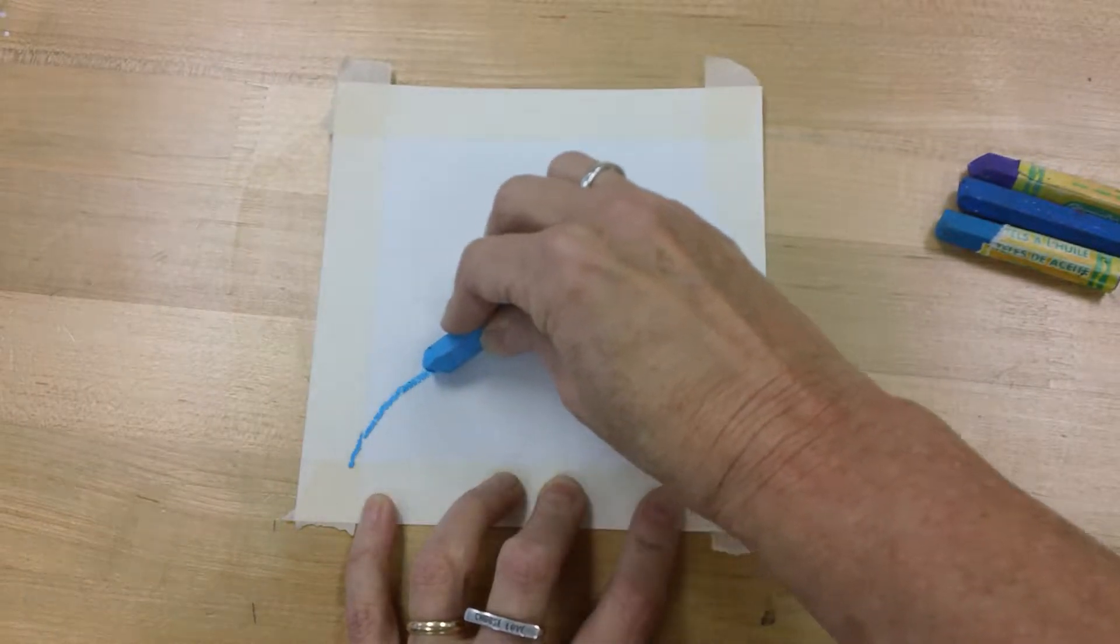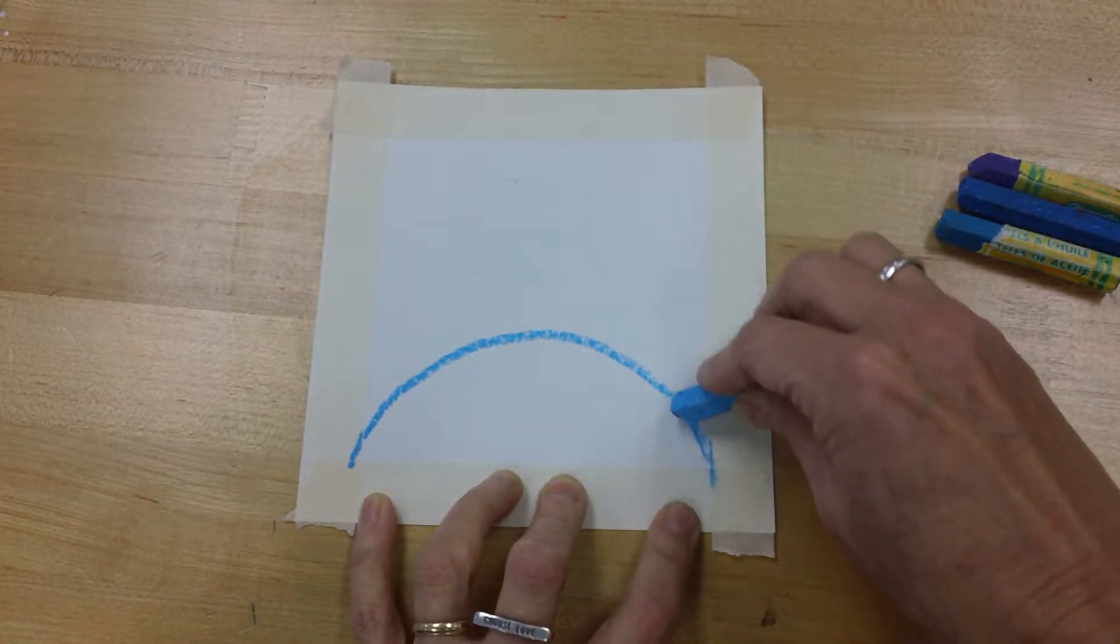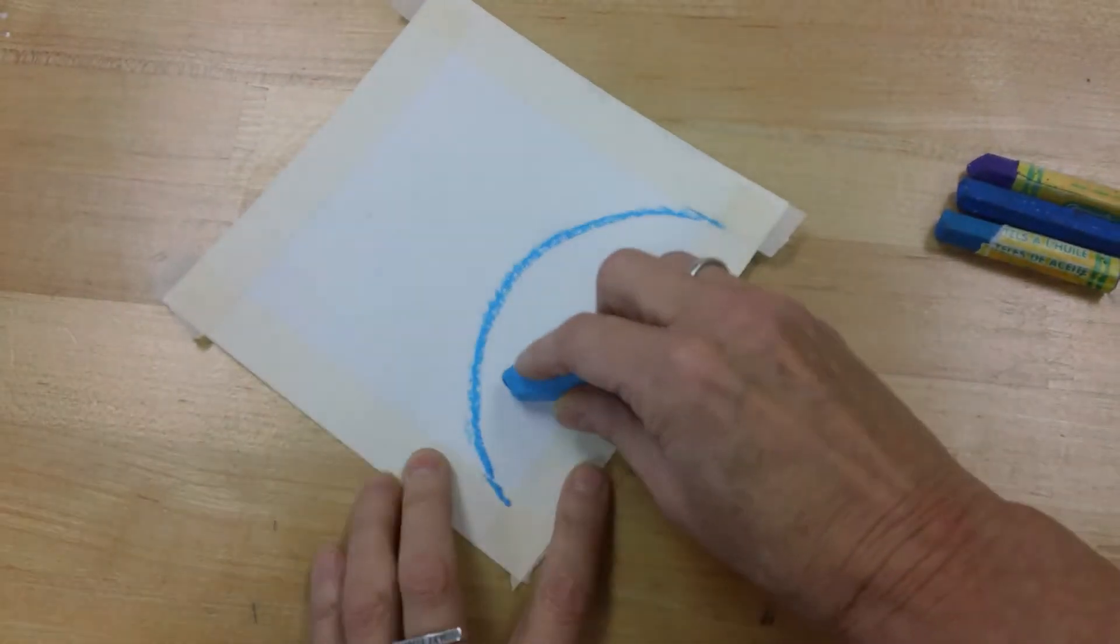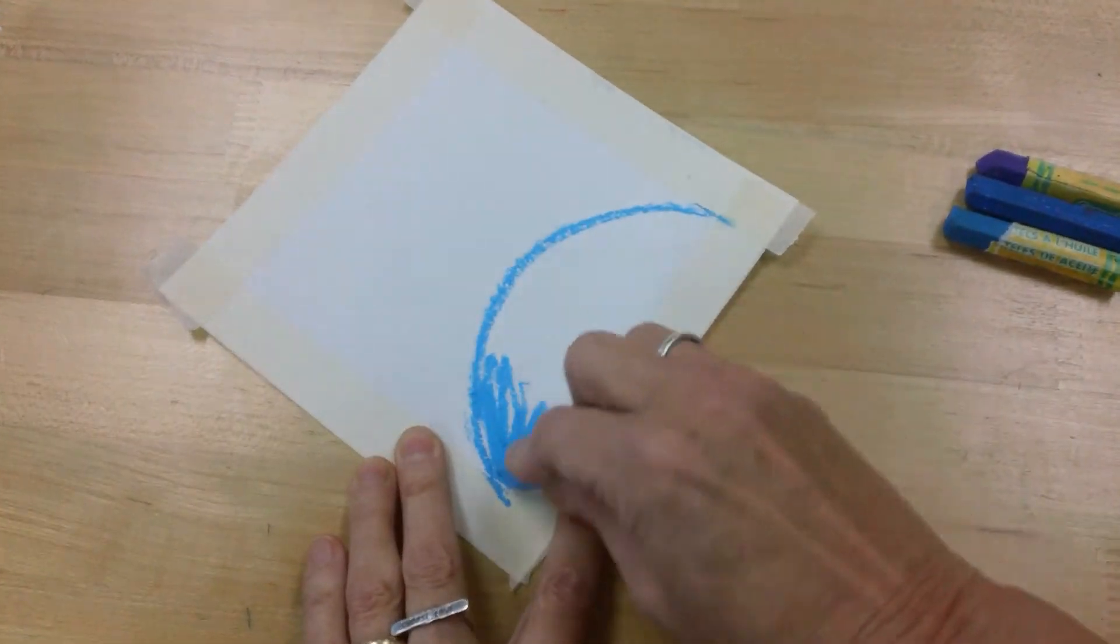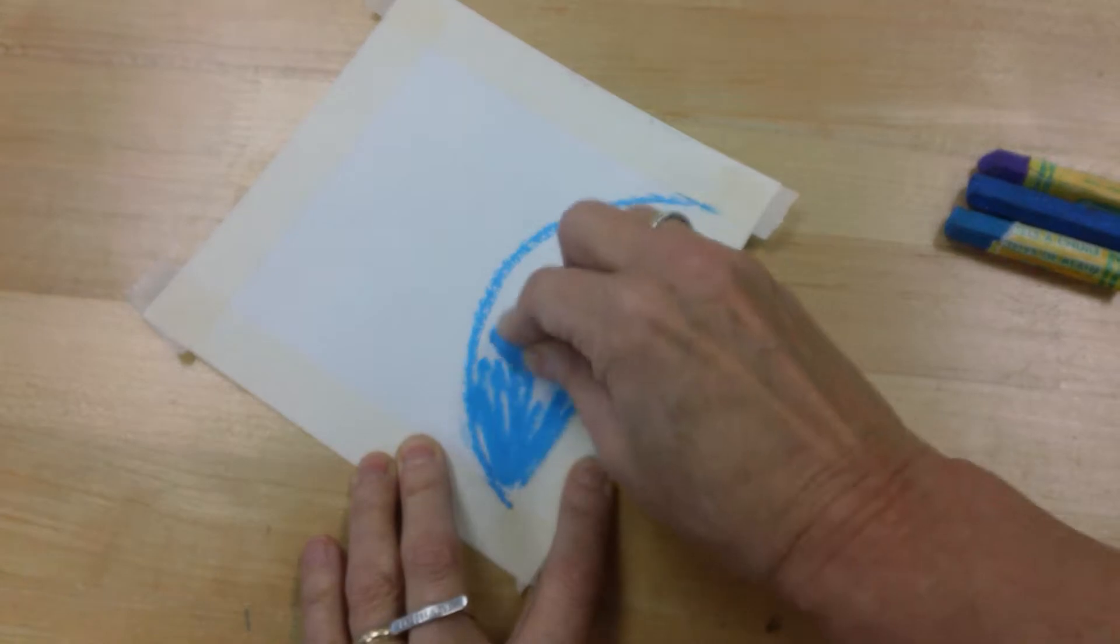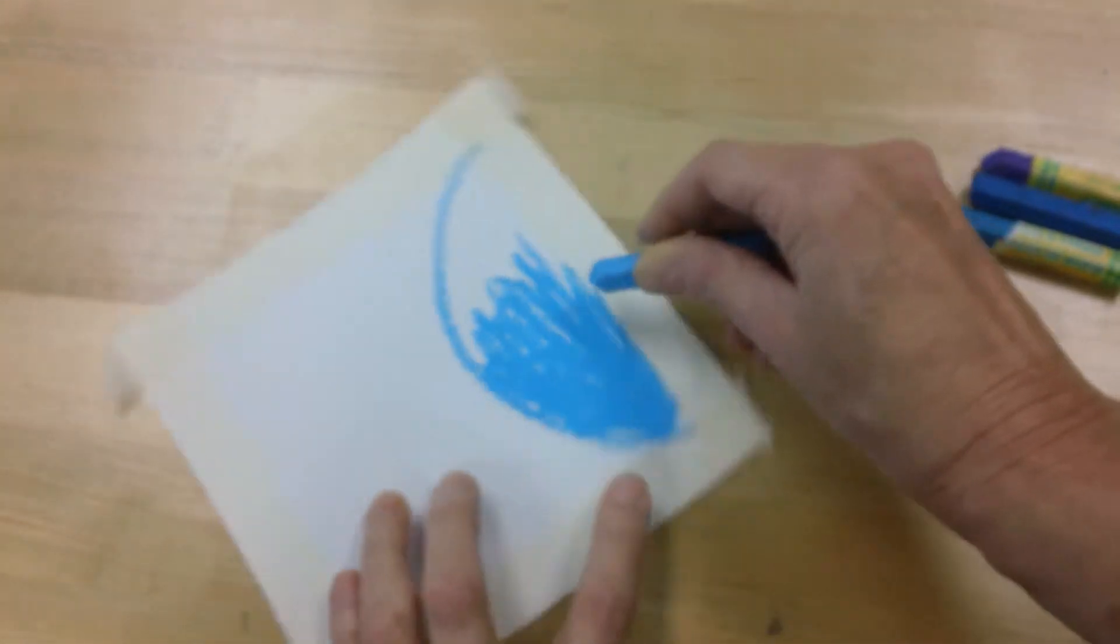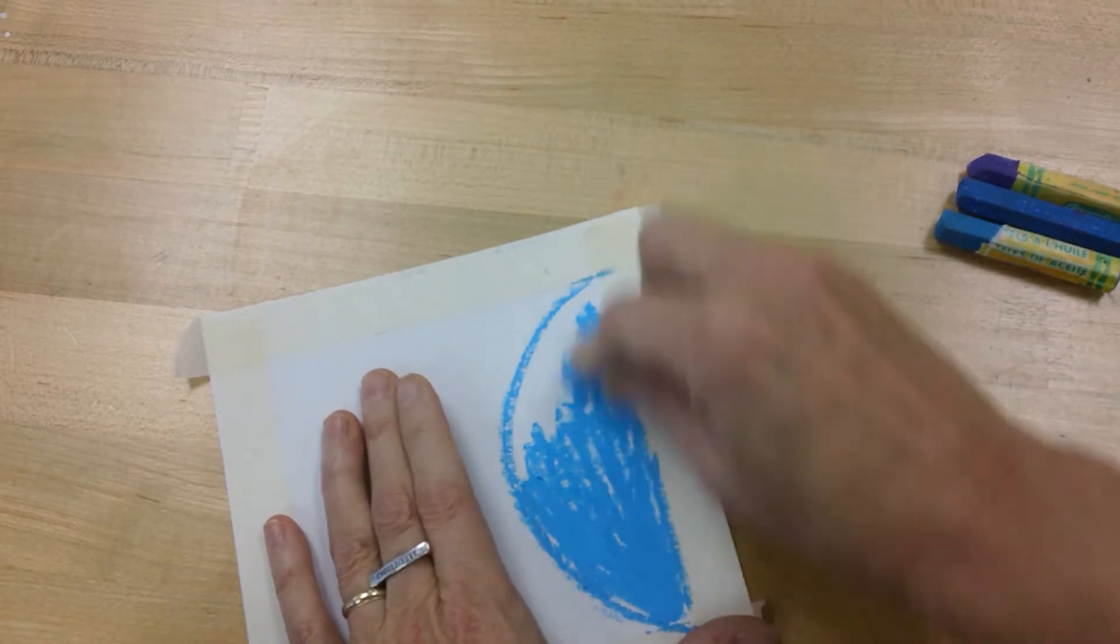I'm going to start with the light blue first. I'm just going to make this arching line from one side to the other. Then I'm going to color in as darkly as I can. I'm going to try not to have a lot of white space showing.